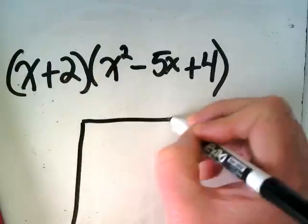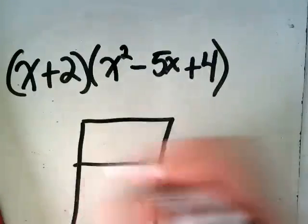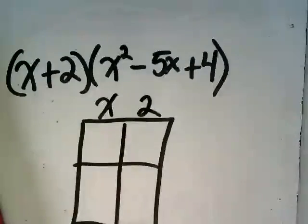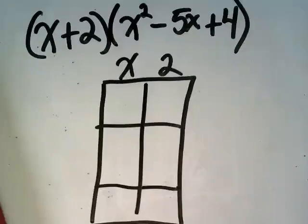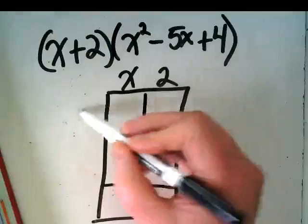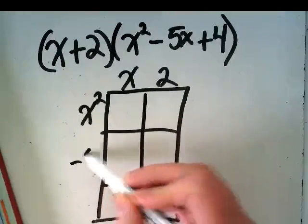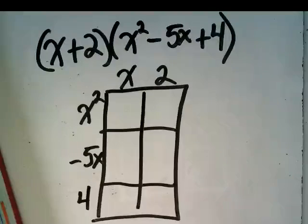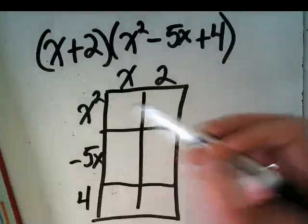How about if we do this box method, and we put the x² up here, what's going to go down the side? x², negative 5x, positive 4. Can you already see how this is going to start happening? Yes.